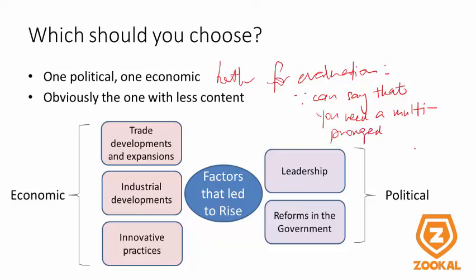This is one of the tricks to write your L6 and do your evaluation — just say that one cannot stand alone, you need both. Obviously you choose one economic and one political, say they work hand in hand, and that you cannot just have an economic factor only. Also, choose the factor with less content — you don't want to write too much.